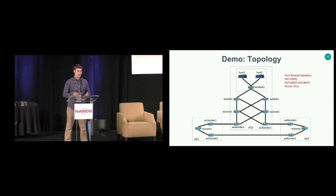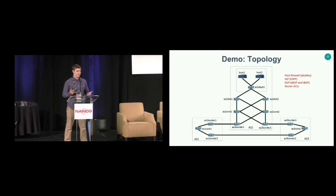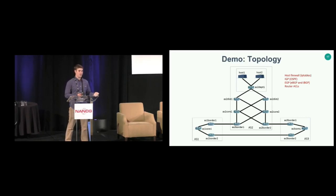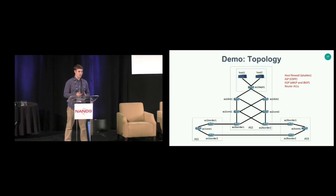Let me show an example demo of how you can use Minesweeper on a real network. I'm analyzing a simplified version of a campus network where the campus is autonomous system AS2. It has border routers connecting to upstream ISPs, a tier of core routers serving as route reflectors, and a tier of distribution routers connecting to individual academic departments. I'm going to check a reachability property between one of the hosts in a department and the border routers — making sure the border routers will always have a route to host one.